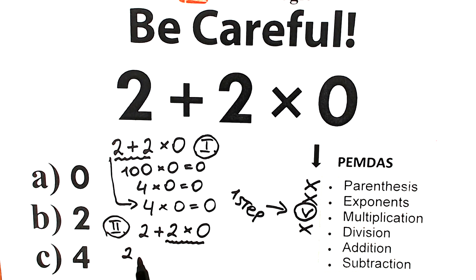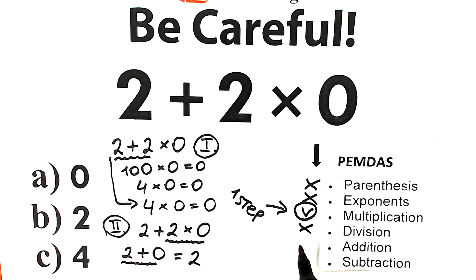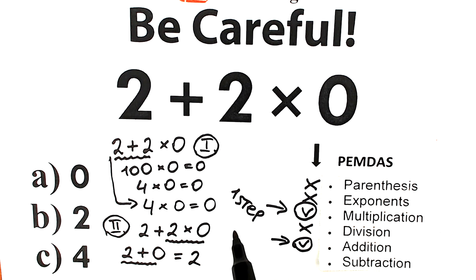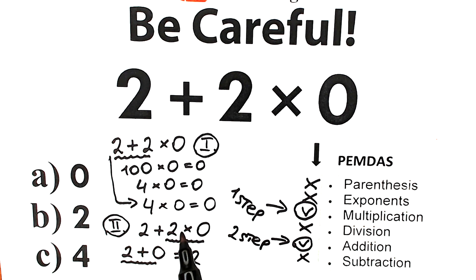So our first step is to solve the multiplication: 2 times 0 equals 0. Then we have 2 plus 0, which is equal to 2. Our addition is the last step — and as you can see, multiplication always comes before addition. First we multiply, then we add.